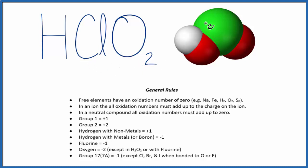So the white, that's the hydrogen, the green, that's the chlorine, and then we have the two oxygens in red. So these rules here, they'll help us find the oxidation numbers.